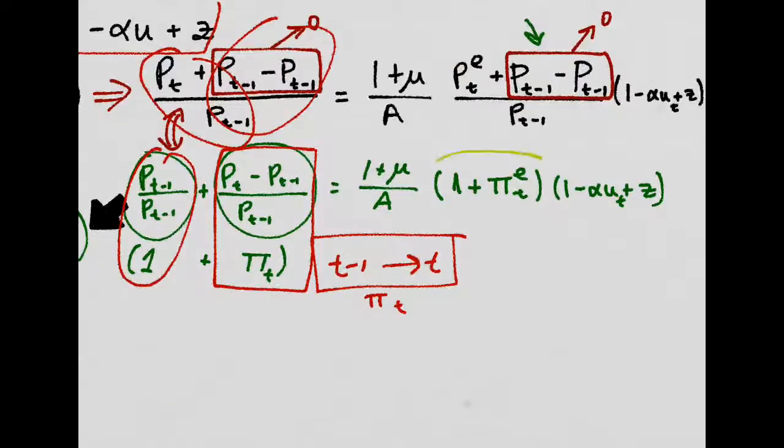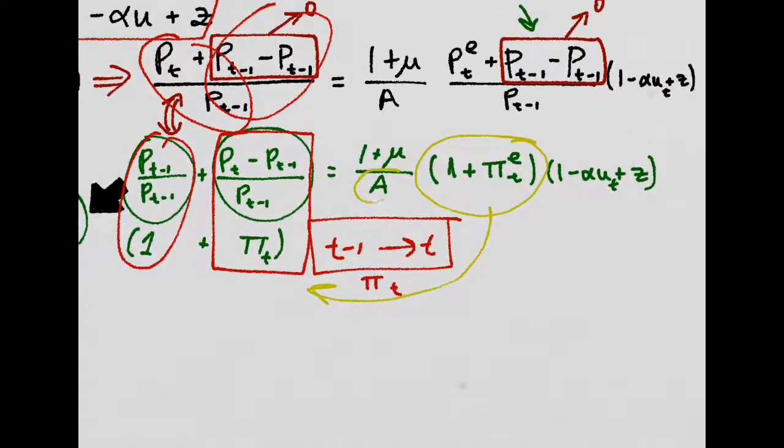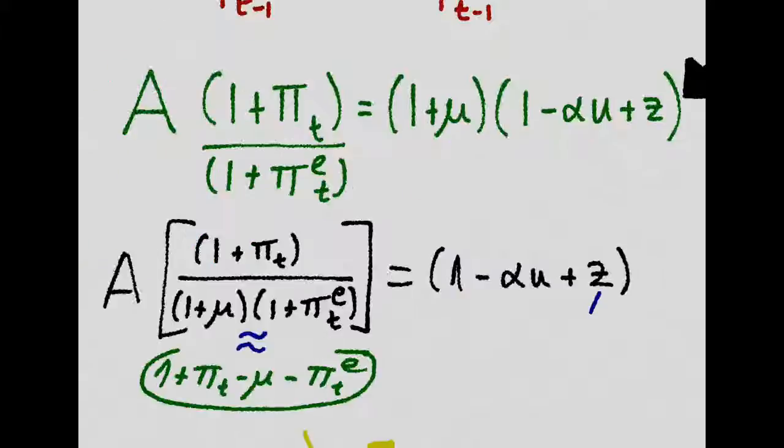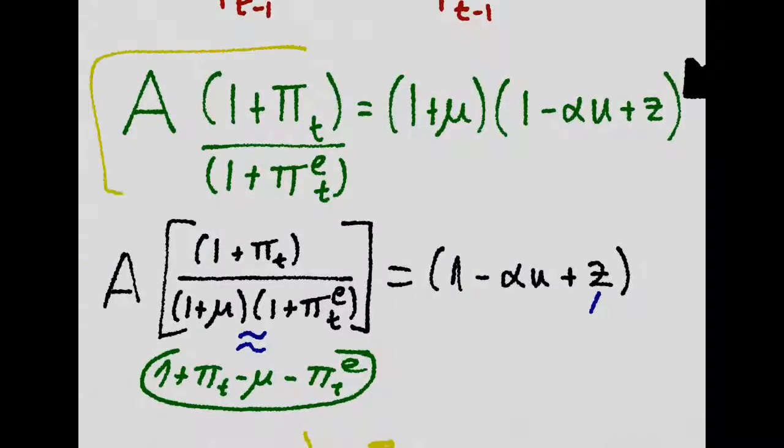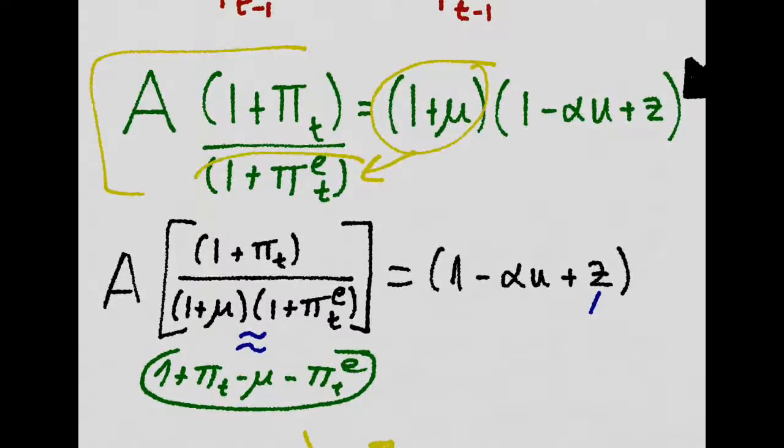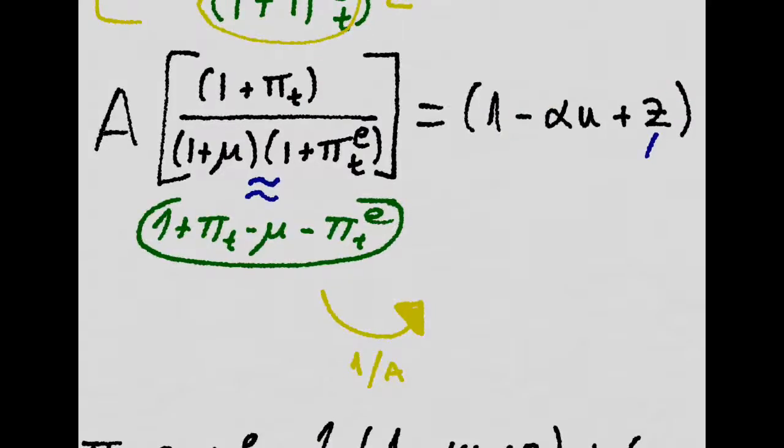Now we can take this dividing over there, and this multiplying over there, and we get this. We take that dividing here, which is just multiplying this, and we are right to this.